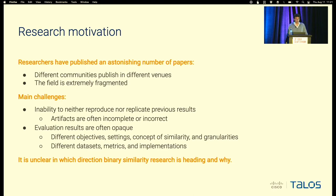Also, when evaluation appears in the paper, the results are often opaque, due to many reasons — for example, different objectives, different settings like comparing cross-architecture versus cross-optimization, different concepts of similarity, and different granularities like research focused on function comparison versus basic block comparison. And if we add different datasets, different metrics, and different implementations, the result is a very unclear situation where we don't know in which direction binary function similarity is heading.